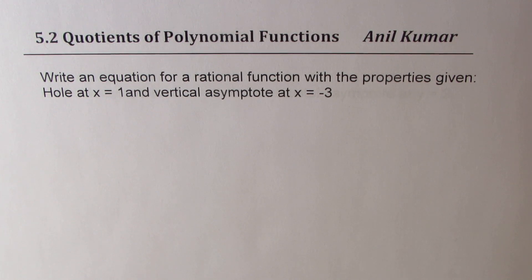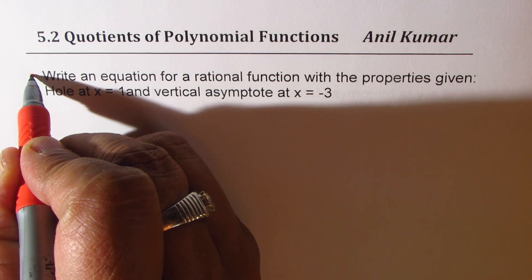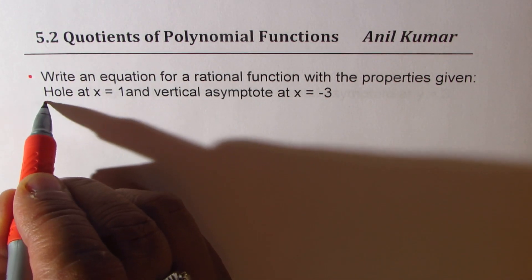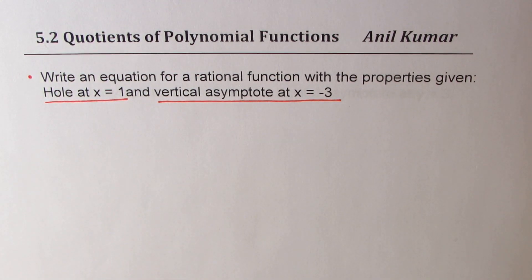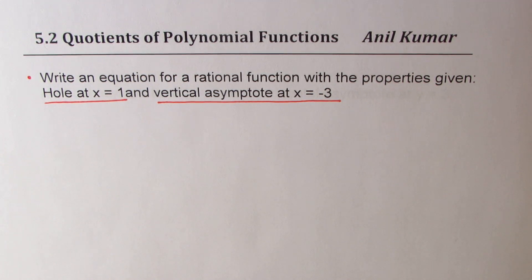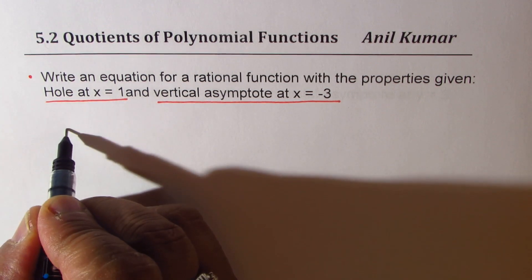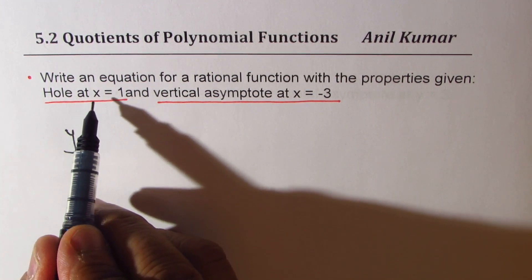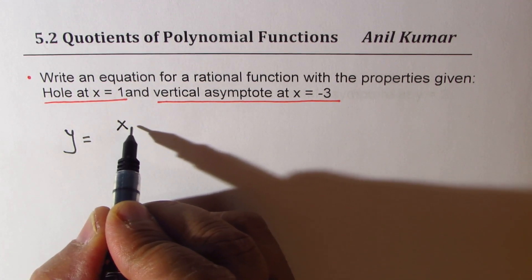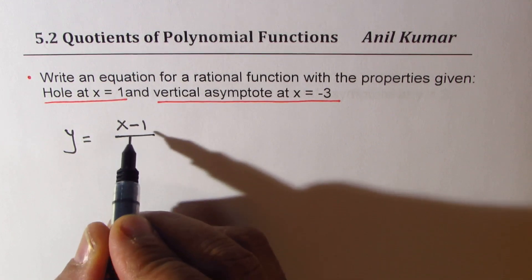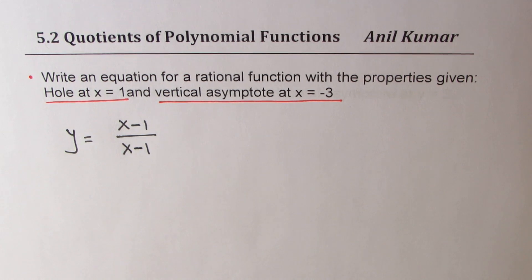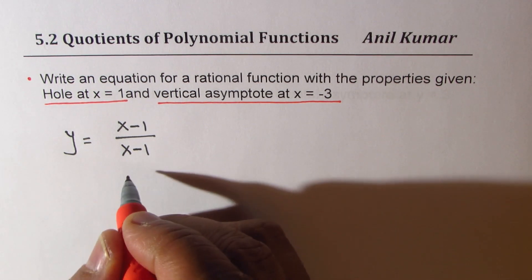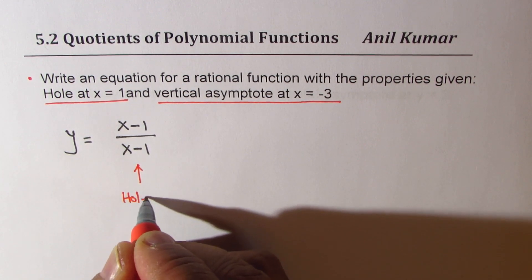The very first one: we are given two characteristics of a rational function. First, we have a hole at x equals 1. The second one is vertical asymptote at x equals -3. The idea here is to understand both concepts. A hole at x equals 1 means x minus 1 is a common factor in both numerator and denominator. When they are common in numerator and denominator, that will give you a hole.